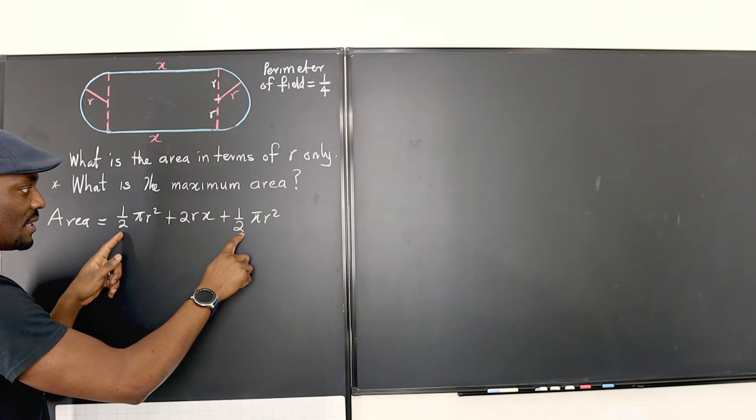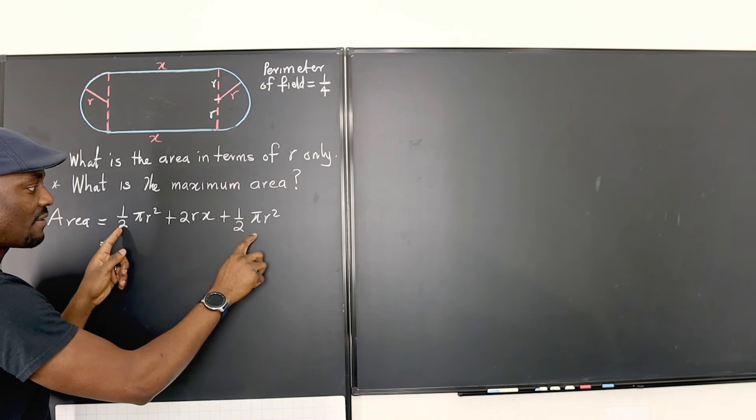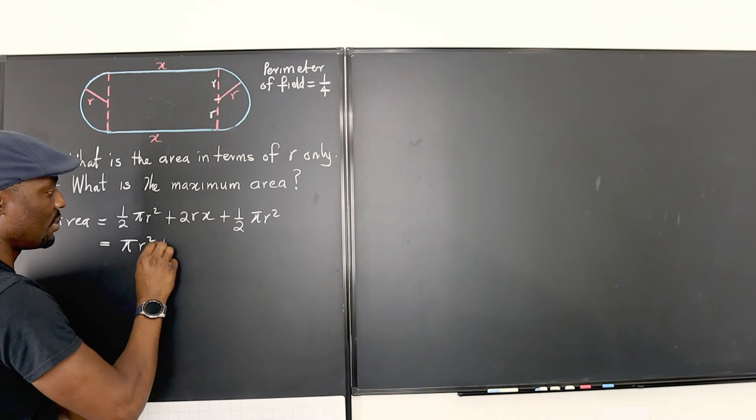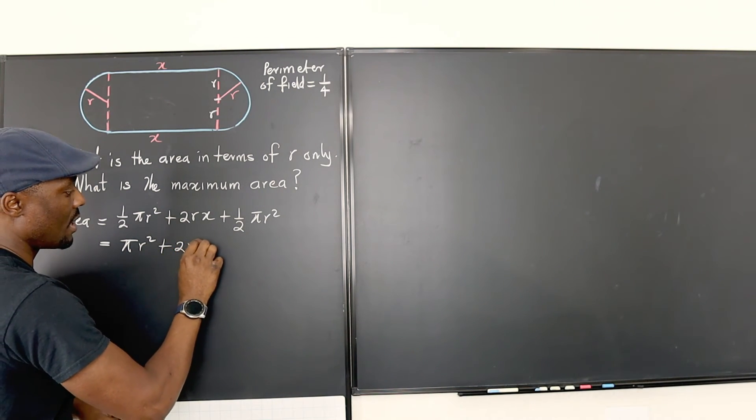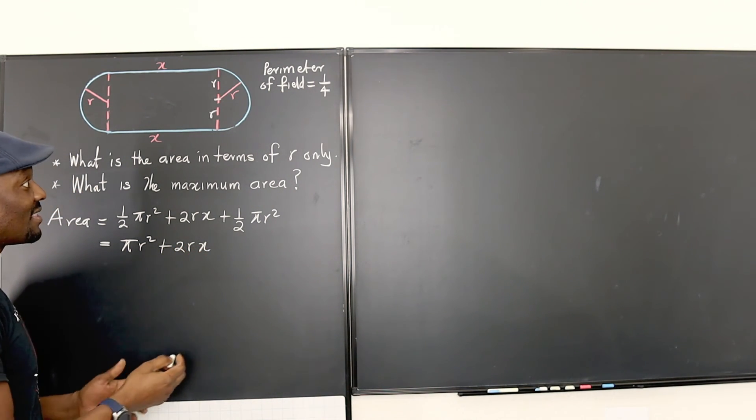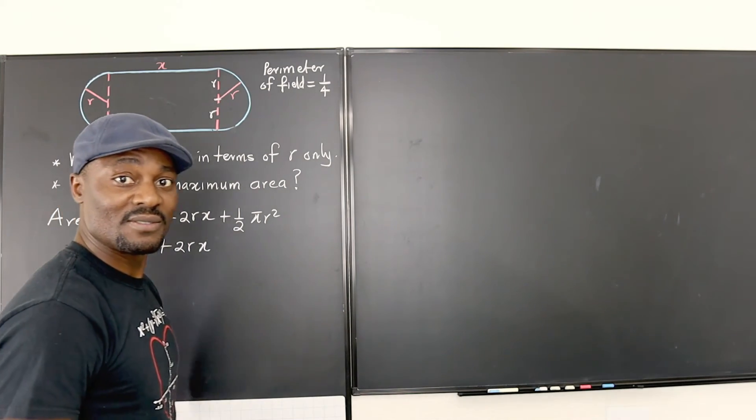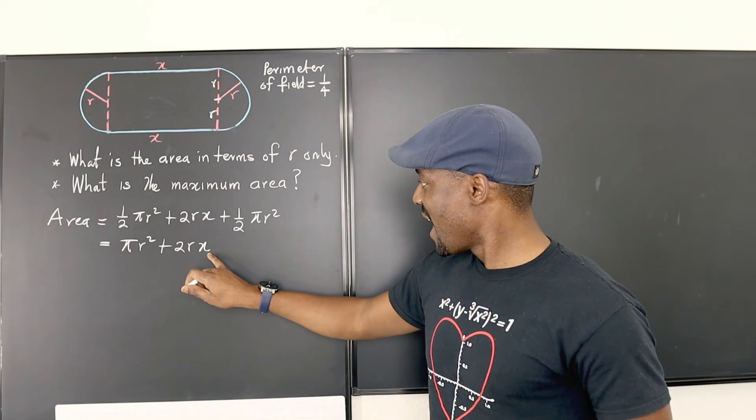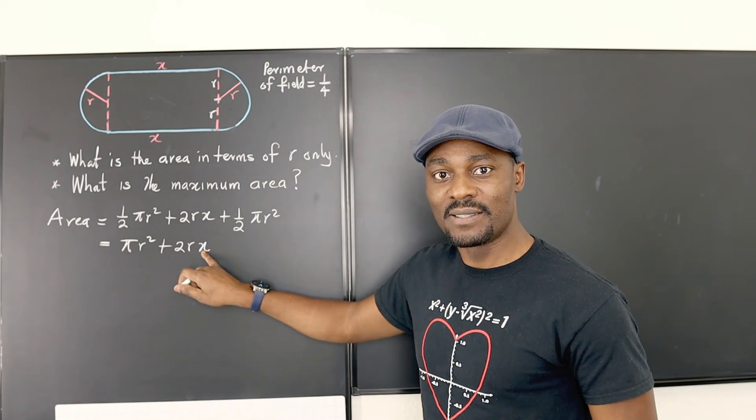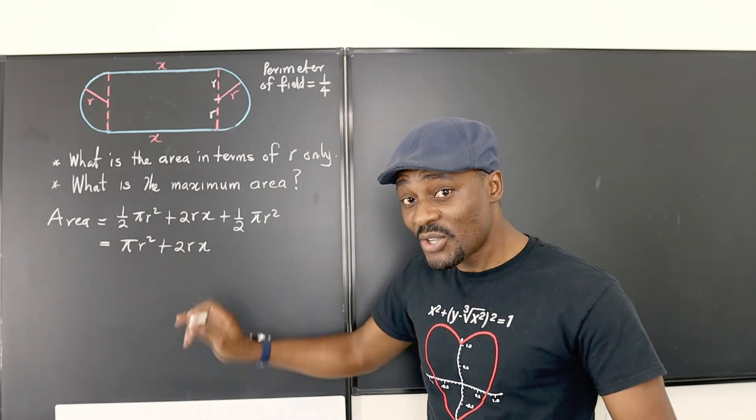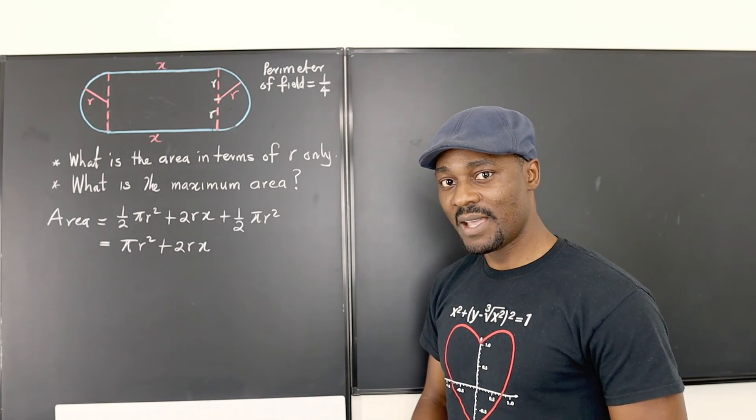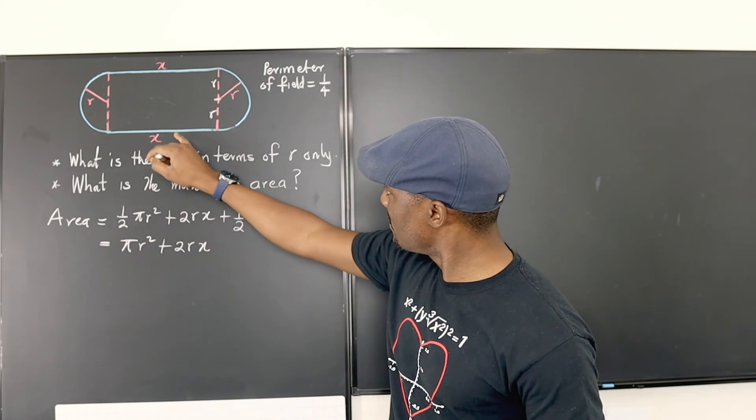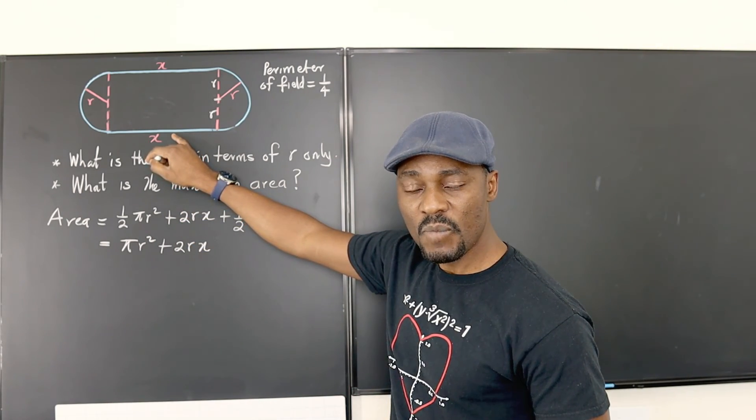Can we add these two together? Yes. So let's put them together. One-half plus one-half gives you 1 so it's going to be pi r squared plus 2rx. See, that's the answer to the first question. The only problem is that we don't want x in the answer. We just want you to write it in terms of r. Just get rid of this x. But how do we get rid of the x? Because it's the side.